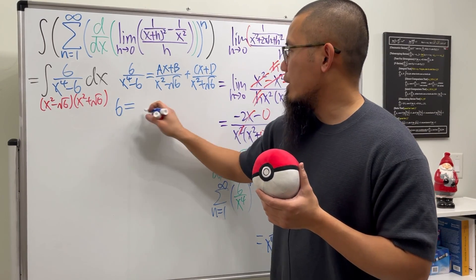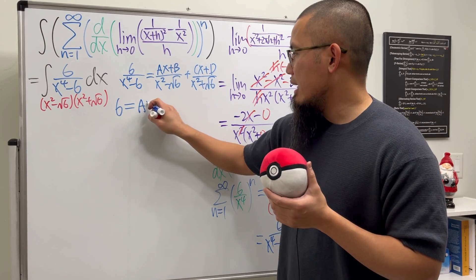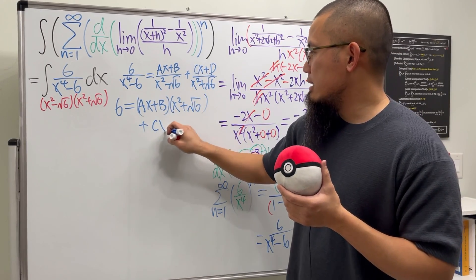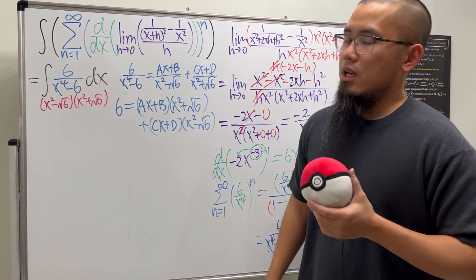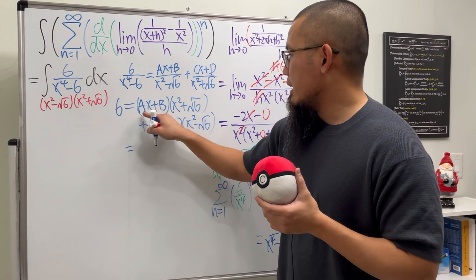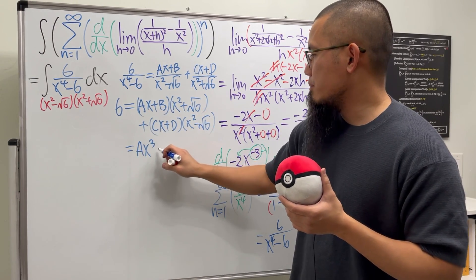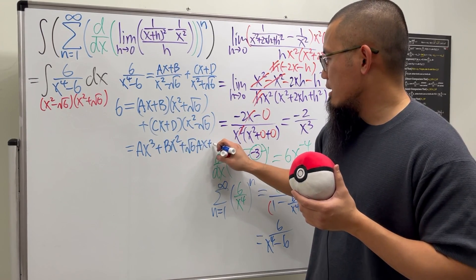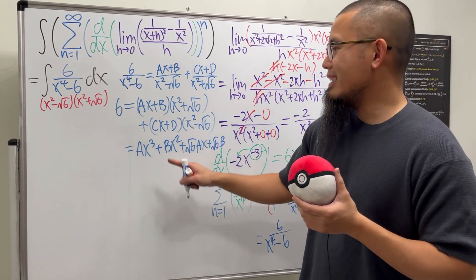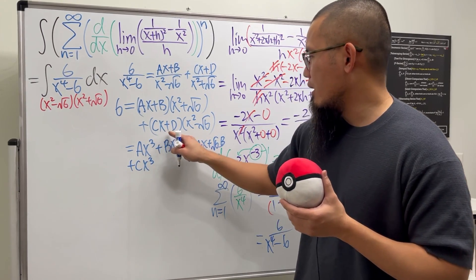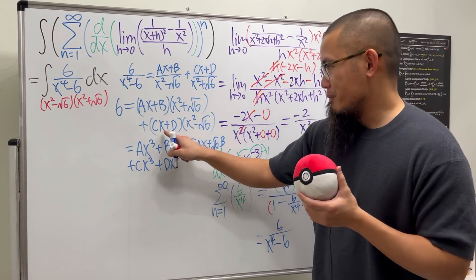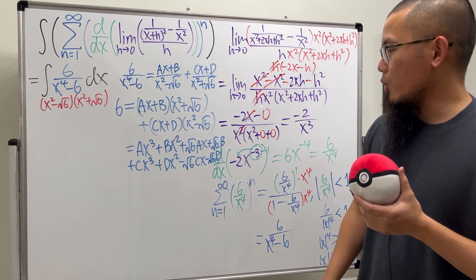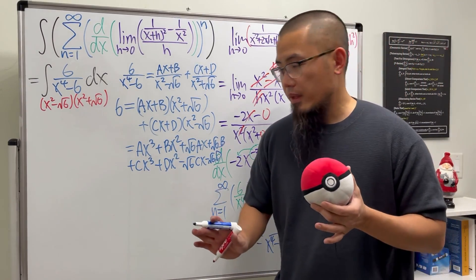Multiply everything by both factors. On the left we get 6. On the right we expand: (ax + b)(x squared + square root of 6) gives ax cubed + bx squared + square root of 6 times ax + square root of 6 times b. Then (cx + d)(x squared minus square root of 6) gives cx cubed + dx squared minus square root of 6 times cx minus square root of 6 times d.